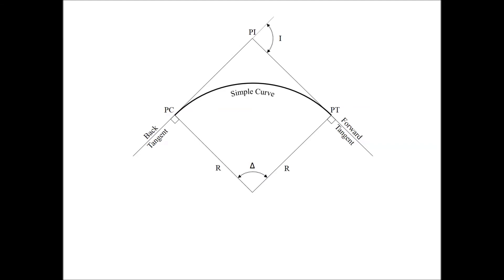The PT is the point of tangency — the point where the circular curve ends and the highway returns to the tangent. The forward tangent is at a right angle to the curve at this point. And delta, the central angle, is the angle formed by the two radii drawn from the center of the circle to the PC and PT. The central angle is equal in value to the intersecting angle.